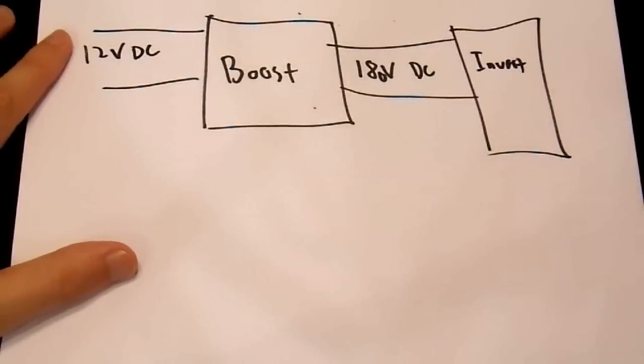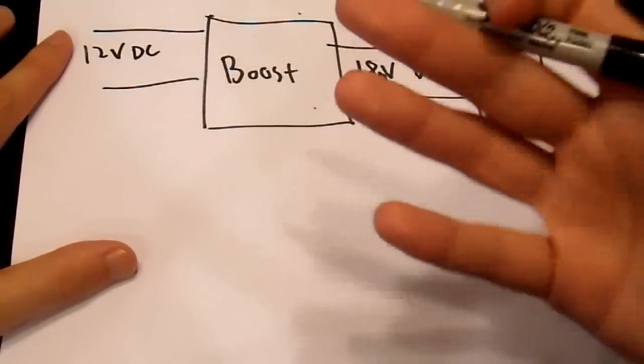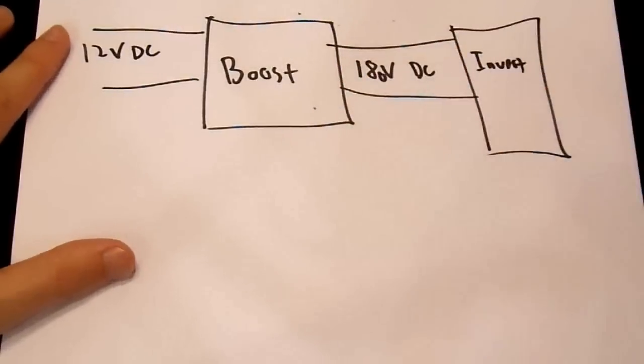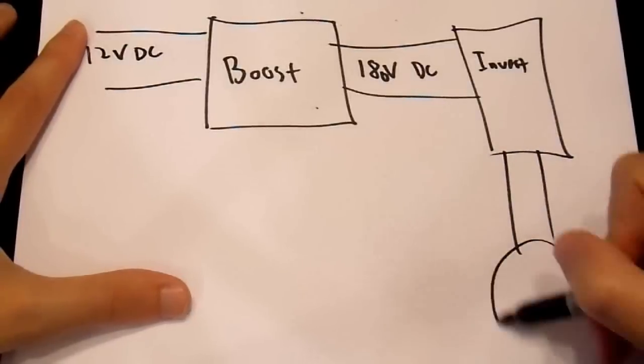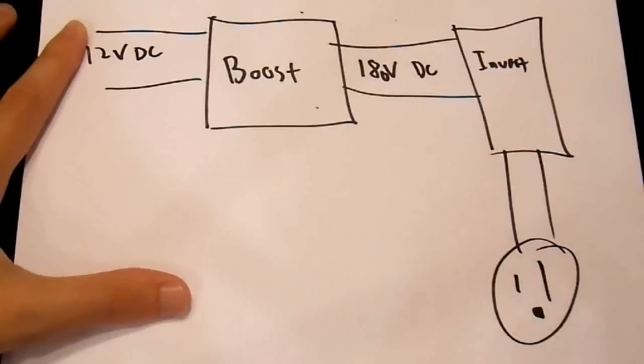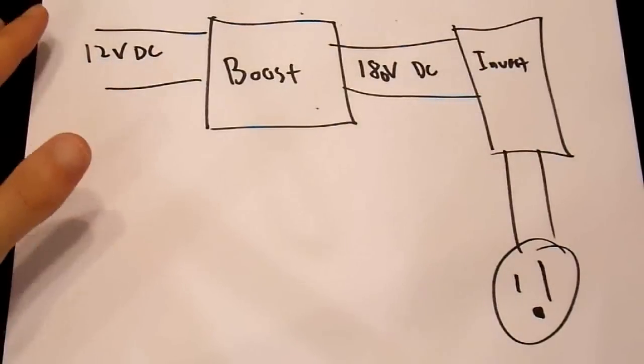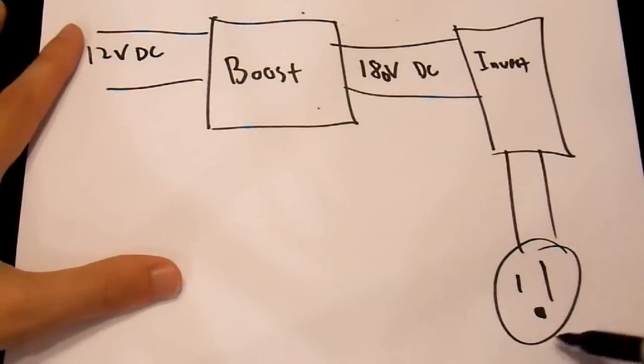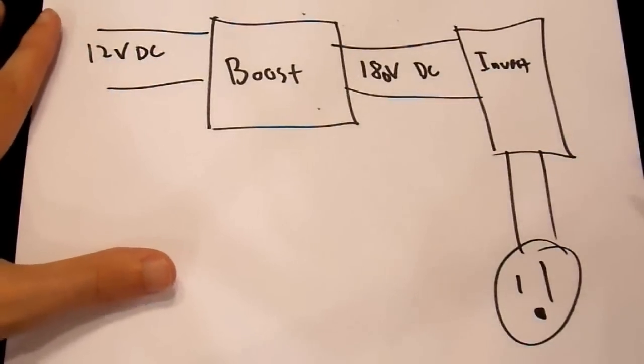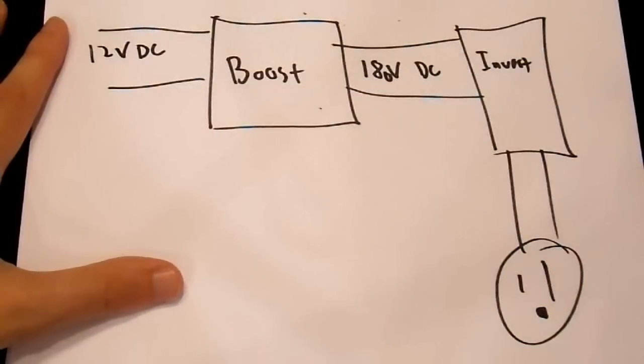And we'll call this the inverter stage. So this inverts the voltage, swaps back and forth in polarity, and this goes out to your outlets. Whatever your outlets look like in your particular country, ours look like a smiley face. But in any case, this is, in general, how the inverter works. But a phase-corrected inverter works just slightly different than a non-phase-corrected inverter. And that difference is in the boost stage and in the invert stage, and how the two relate to each other.